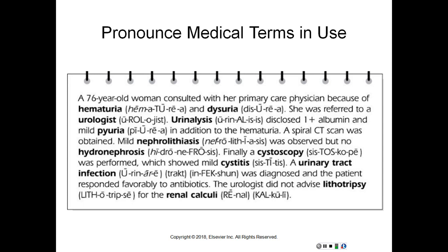A 76-year-old woman consulted with her primary care physician because of hematuria and dysuria. She was referred to a urologist. Your analysis disclosed one positive albumin and mild pyuria in addition to the hematuria. A spiral CT scan was obtained. Mild nephrolithiasis was observed, but no hydronephrosis. A cystoscopy was performed, which showed mild cystitis. A urinary tract infection was diagnosed, and the patient responded favorably to antibiotics.